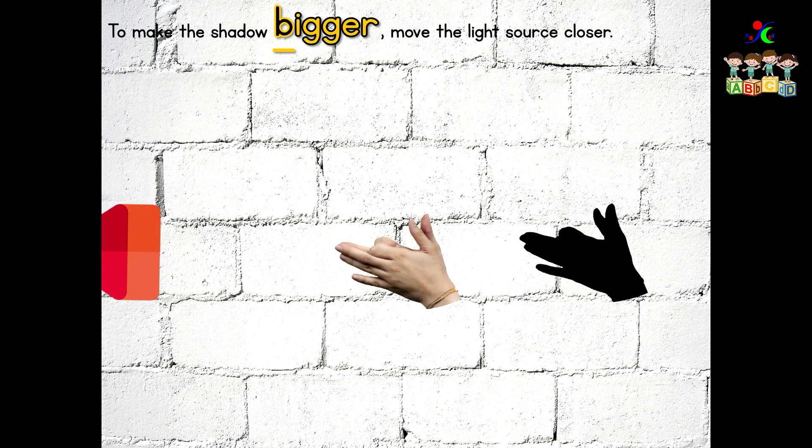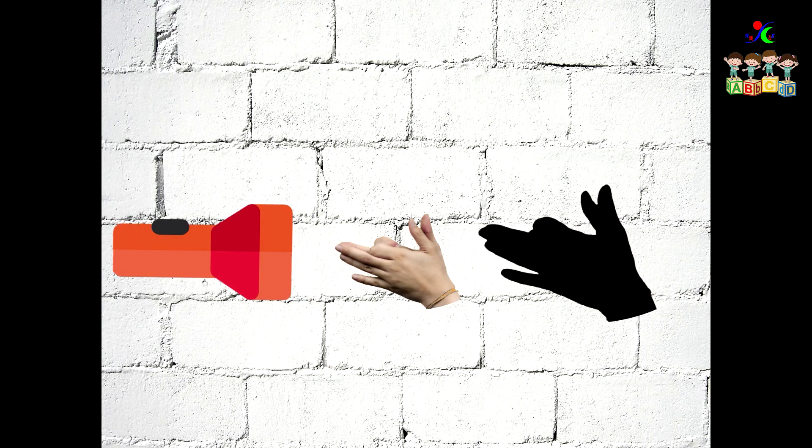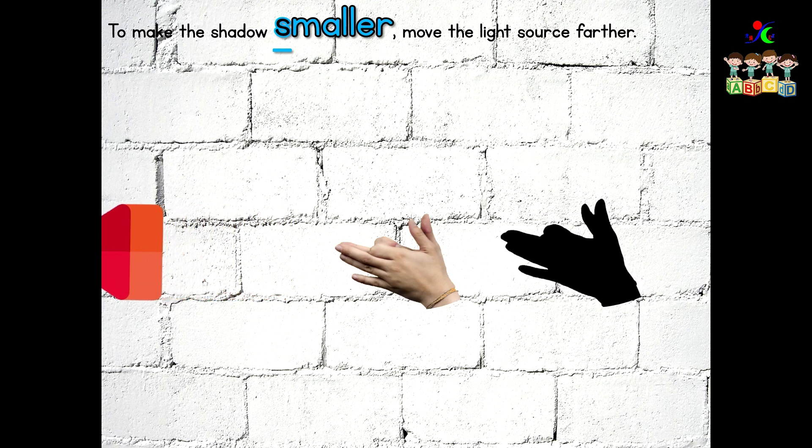To make the shadow bigger, move the light source closer. To make the shadow smaller, move the light source farther away.